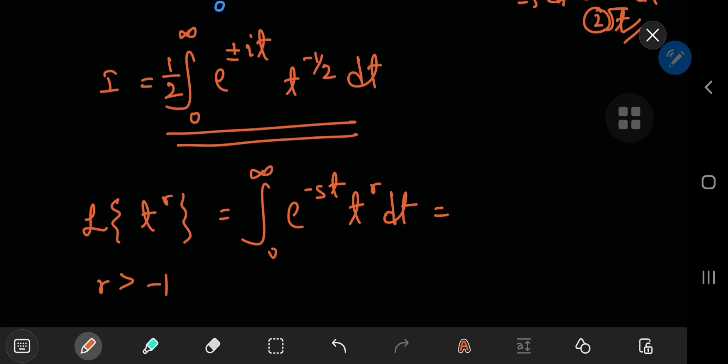is the integral from zero to infinity of e to the negative st times t to the r dt. And this sorts out to, using our table of Laplace transforms,